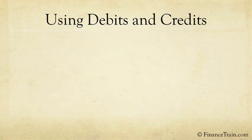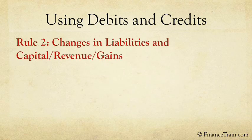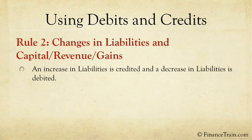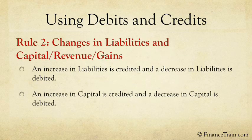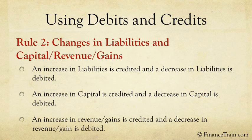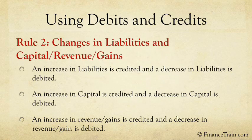The second rule is for recording a transaction related to liabilities, capital, revenues, or gains. An increase in liabilities is credited and a decrease in liabilities is debited. An increase in capital is credited and a decrease in capital is debited. An increase in revenue is credited and a decrease in revenue is debited.